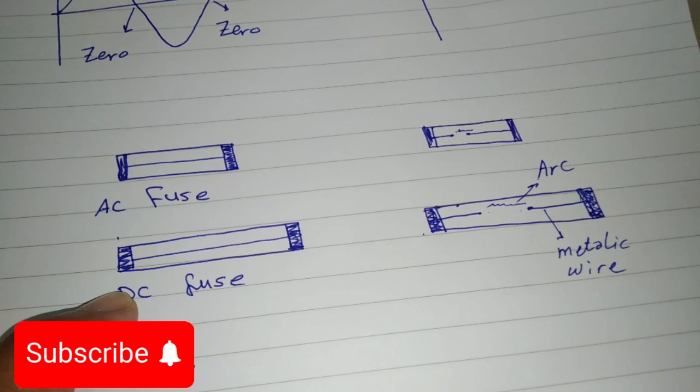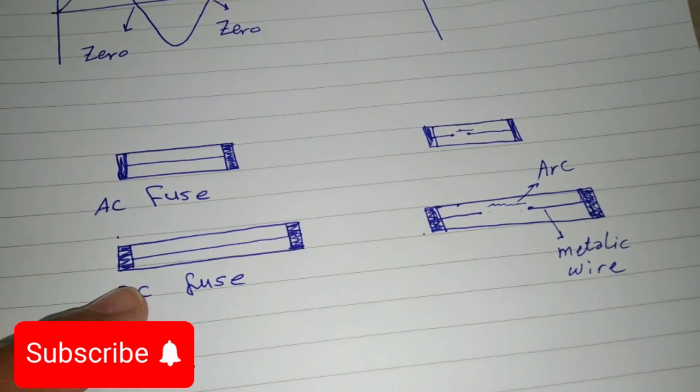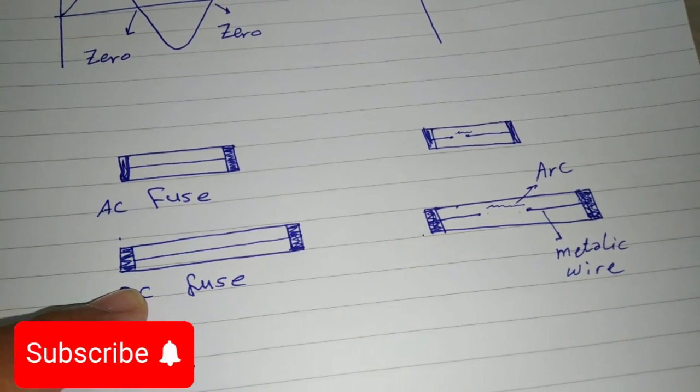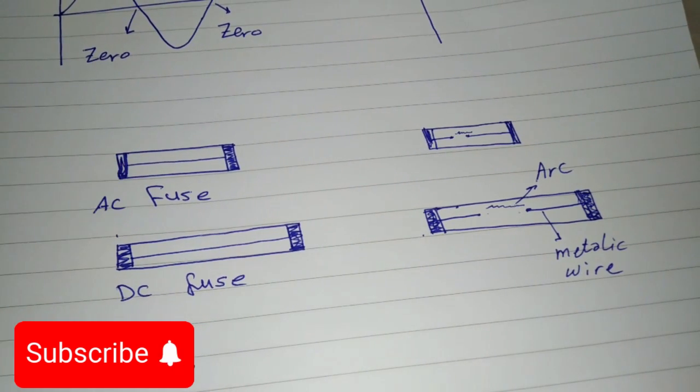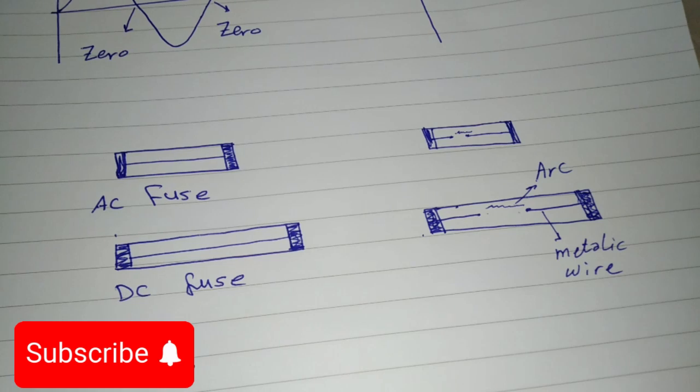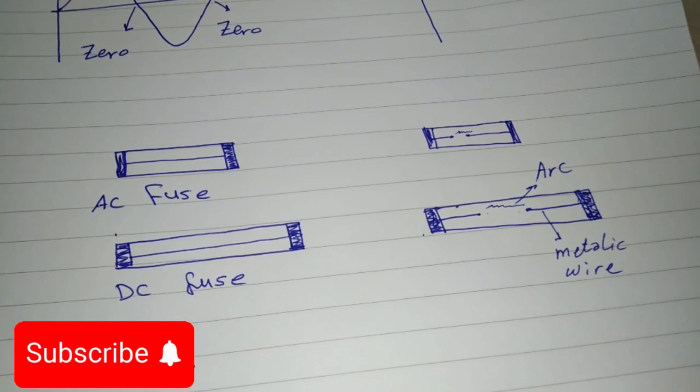So, there you have it. Using AC fuses in DC circuits? A big no-no. Always match your fuse to your circuit type to keep your electronics safe and avoid any shocking surprises. Remember, the right fuse can be the hero your circuit needs.